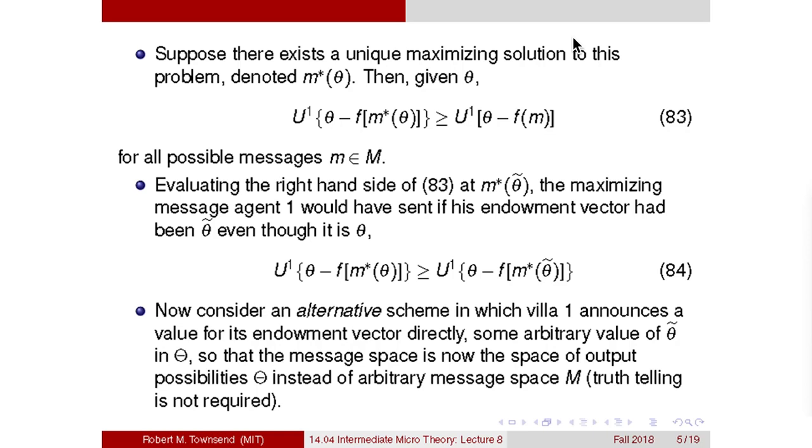So let's suppose the agent one knows exactly what he or she wants to do. Namely, when his or her endowment is theta, the best possible message that could be sent in that abstract space is m star of theta. This is the maximizing message sent by agent one to agent two when his endowment is actually theta. This is a way to write the fact that it's maximizing, namely the overall outcome for agent one in terms of agent one's utility is as high as it can possibly be relative to any other possible message that could be sent. There may be ties, but at least m star is maximal. The inequality doesn't go the other way. If it went the other way, less than or equal to, there would be a message m that did better than what we said is the maximum, and that would be a contradiction. So 83 is just a statement of maximization.